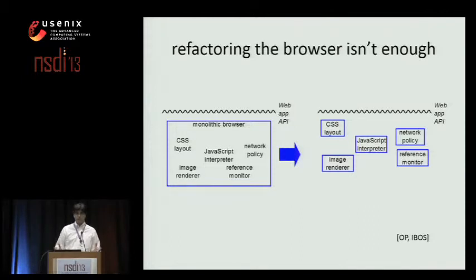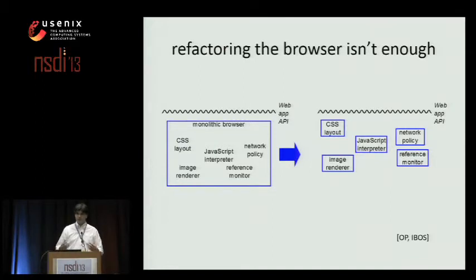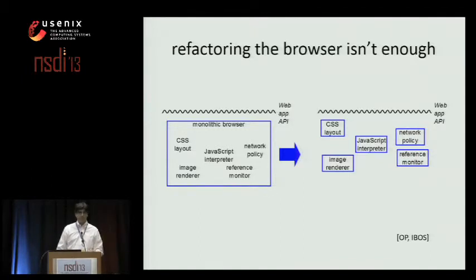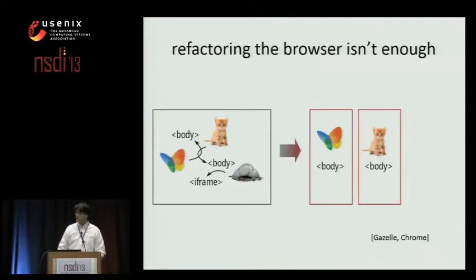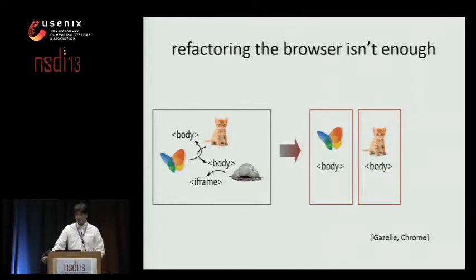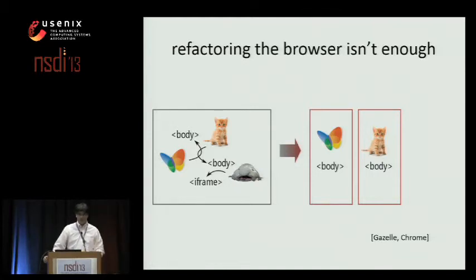Our community has been aware for some time of these flaws in the web, and we've been trying to fix browsers — mostly by attempting to repair the browser itself without breaking the API or the existing applications. Projects like OP and iBoss refactor the monolithic browser into clean modular units. Projects like Gazelle and Chrome refactor the browser's heap to separate pages into containers to contain faults. Both approaches have improved some classes of bugs, but ultimately if we're not going to break the web, the refactored browser still has to implement this standard and complex web API.